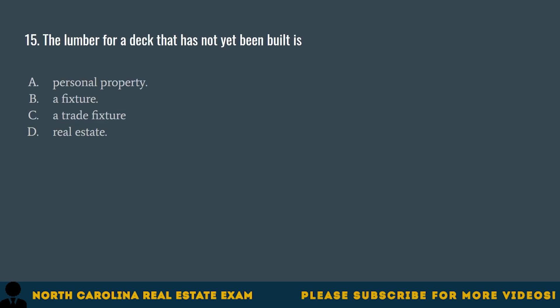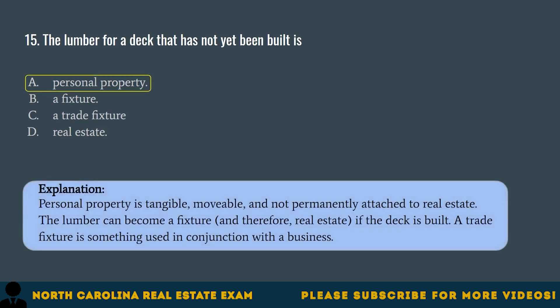Question 15. The lumber for a deck that has not yet been built is A. Personal property. B. A fixture. C. A trade fixture. D. Real estate. The correct answer is A. Personal property. Personal property is tangible, movable, and not permanently attached to real estate. The lumber can become a fixture, and therefore real estate, if the deck is built. A trade fixture is something used in conjunction with a business.